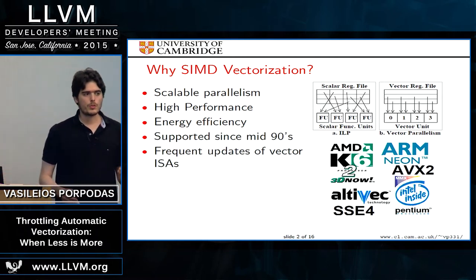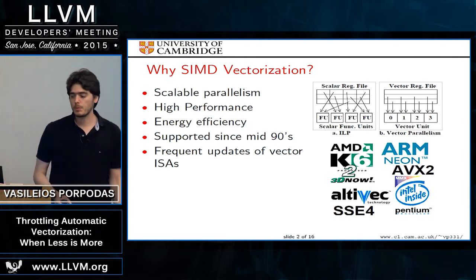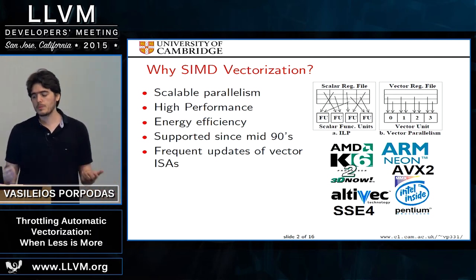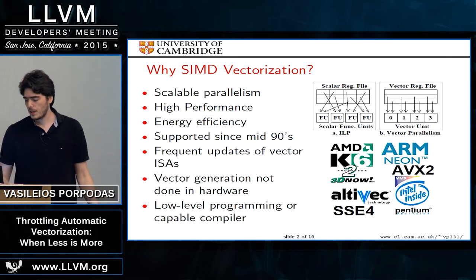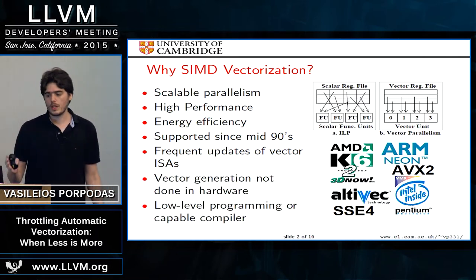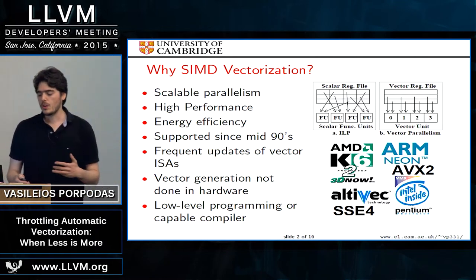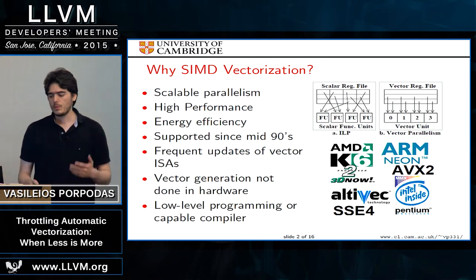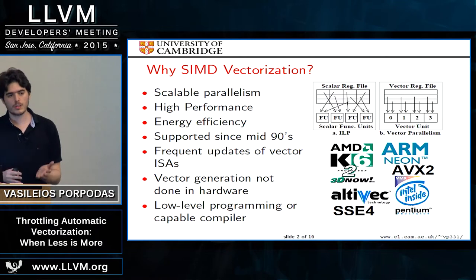Processor makers have been supporting SIMD vectors since at least the mid-90s in general-purpose processors, and instruction sets have been kept up to date with more powerful and complete versions. The problem is that, unlike ILP extraction, vector parallelism is not extracted at runtime by the hardware itself — it is up to the software to do that. The goal is to improve compiler technology to more efficiently transform scalar code into vector code.